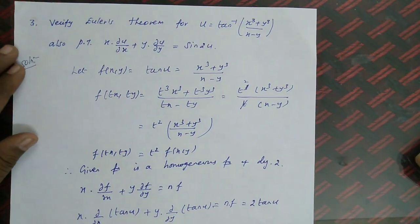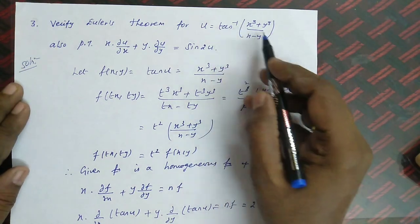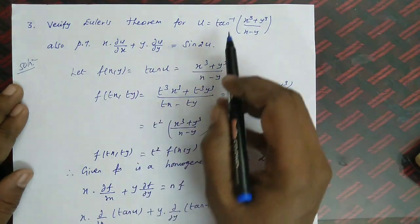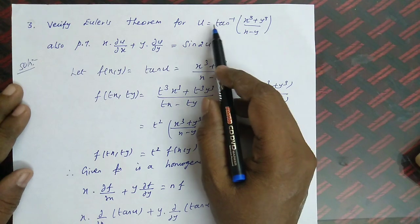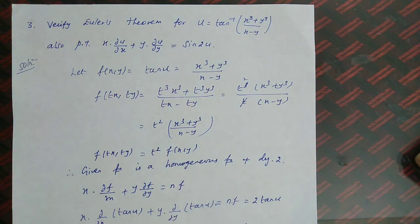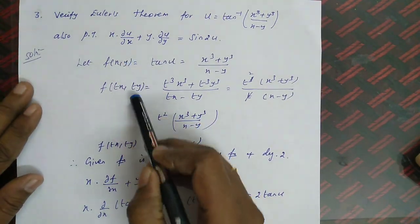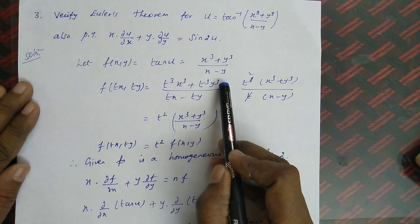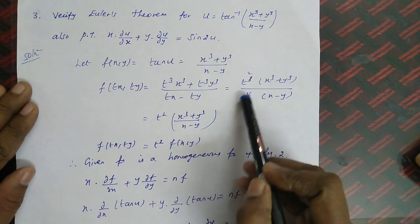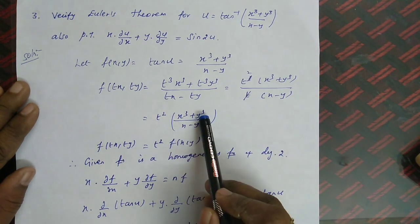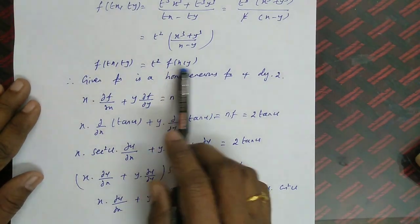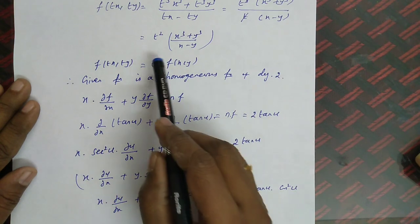The last problem: verify Euler's theorem for u = tan⁻¹((x³ + y³)/(x − y)), and prove that x · ∂u/∂x + y · ∂u/∂y = sin 2u. Taking tan to the left side gives tan u = (x³ + y³)/(x − y). Replacing x with tx and y with ty: f(tx, ty) = (t³x³ + t³y³)/(tx − ty) = t² · (x³ + y³)/(x − y) = t² · f(x, y). So the function is homogeneous of degree 2.